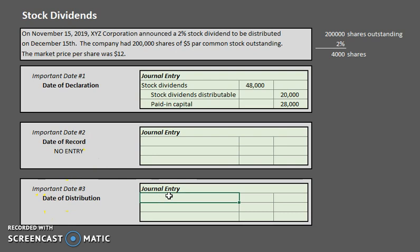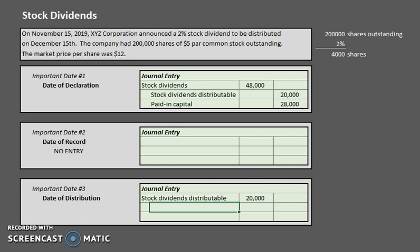For the date of distribution, this is when we finally give out those stock dividends announced back on November 15th. Now that it's December 15th, we are giving out those 4,000 shares. Looking back at our prior entry, we had credited stock dividends distributable, so now that we are distributing them, we debit stock dividends distributable to decrease that account. The credit is common stock, since that is what we are distributing.